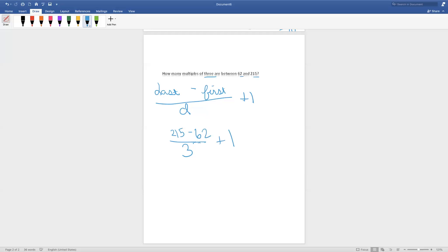Let's start solving. 215 minus 62 equals 153. Now, let's divide that by 3, which is 51. Now, we're going to add 1 to that. We get 52. So, that means there's 52 multiples of 3 between 62 and 215.